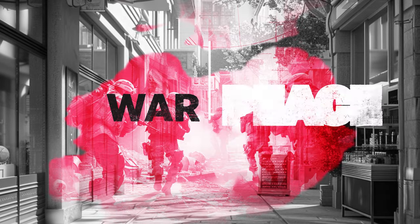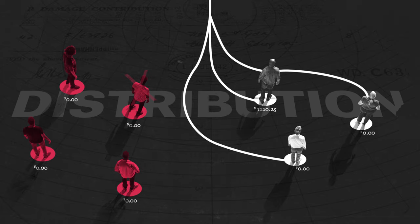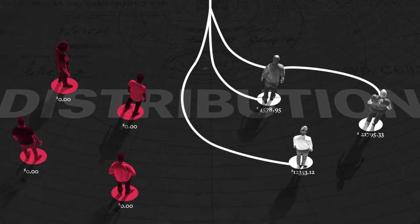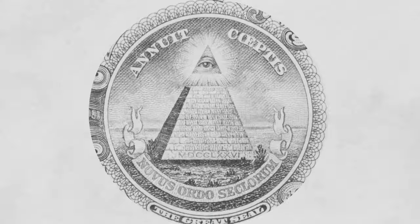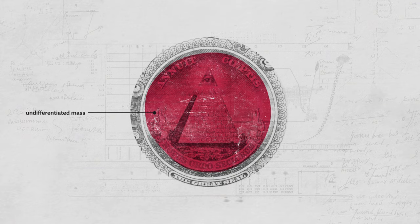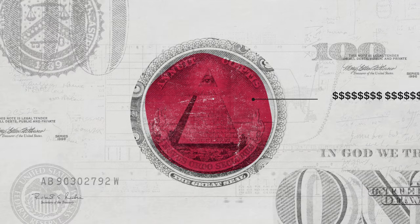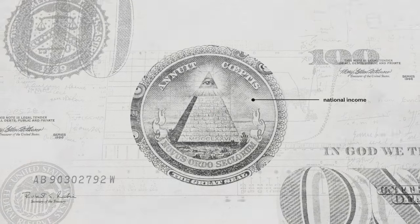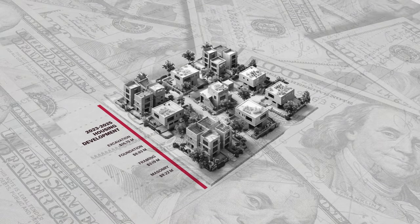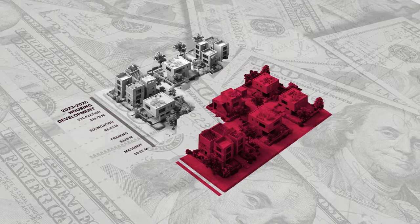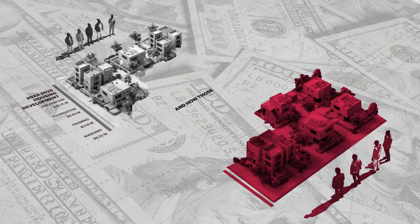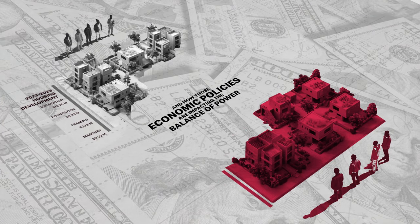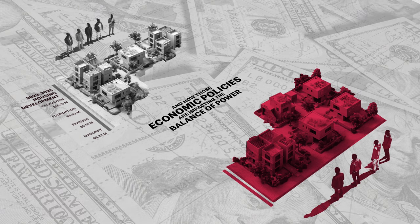Among the tools that economists can use for the purpose of studying war and peace are the analysis of distribution — of who gets what. Because when we're looking at war and peace, we are of course looking at conflicts within societies. And the idea of treating society as if it were an undifferentiated mass, as represented for example by national income or at the micro level by the net benefit of a given development project, is an oversimplification that simply cannot be sustained when a critical issue is who gets what and how those economic policies are impacting the balance of power or the distribution between competing groups.